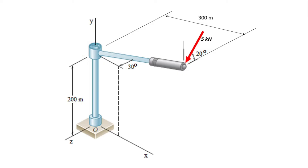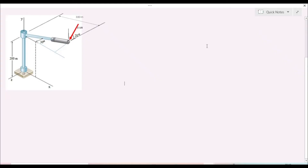We are to find the moment of the 5 kilonewton force about point O. We can see that the force is acting in the plane of the y and z axes, so this force has two components: a component in the y axis and a component in the z axis. Our position vector will be from point O to the point of application of the force — let's call this point B.